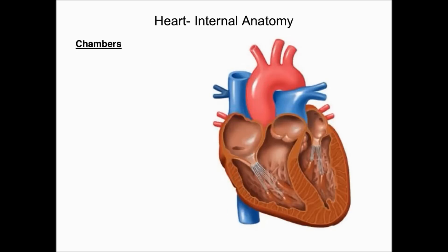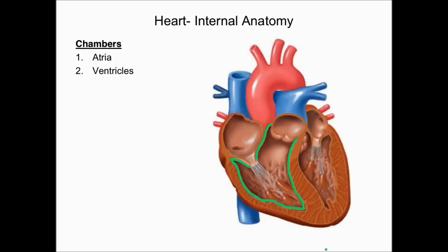From an internal view, you can see all four chambers. The two upper chambers are called the atria and the two lower chambers are called the ventricles. Here's the right atrium, the left atrium, the right ventricle, and the left ventricle.